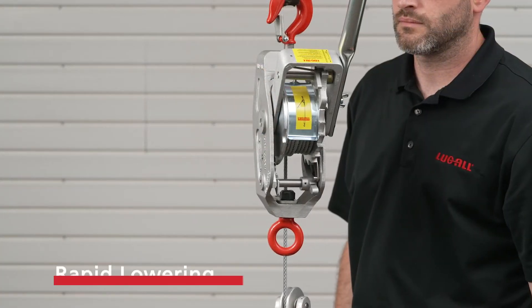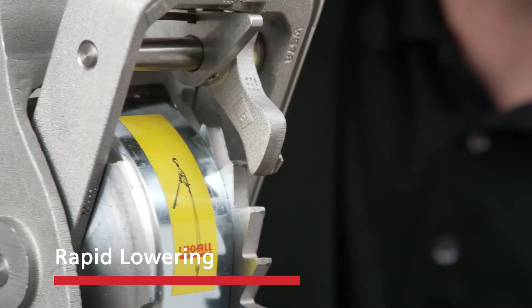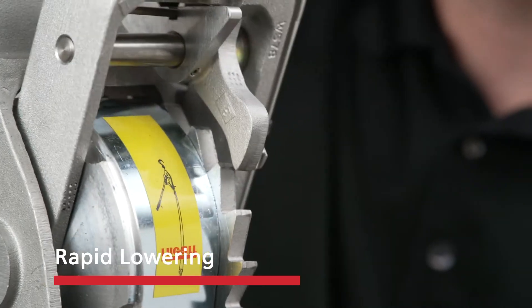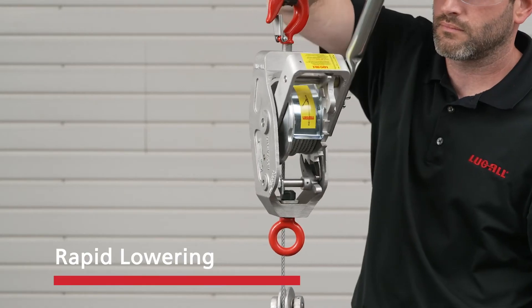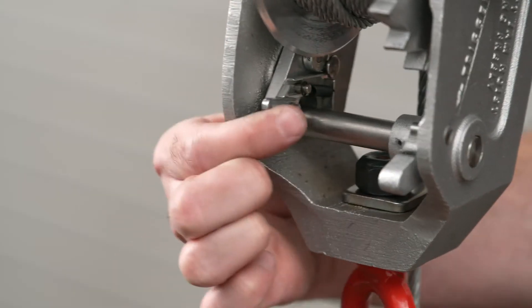To operate the rapid lowering function, first rotate the reverse lever away from the drum as if you are backing off the load normally and move the U-frame pawl away from the ratchet teeth. Flip the rapid lowering switch into the on position.